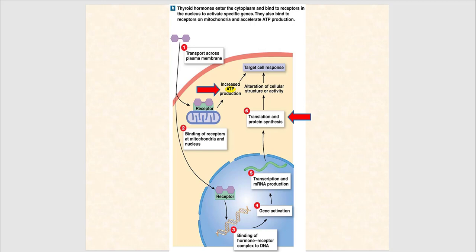This slide specifically shows the lipid-soluble hormones T3 and T4, our thyroid hormones. T3 and T4 enter the target cell and have two types of receptors. The first is found in the mitochondria — binding there results in increased ATP production during aerobic cellular respiration. The second receptor is inside the nucleus; T3 and T4 enter the nucleus, bind to the receptor, and initiate transcription, producing messenger RNA that is then translated into protein.